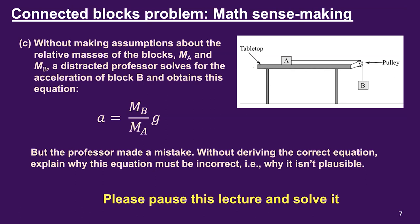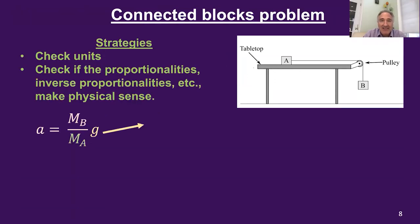Please pause this lecture and solve this problem. On this kind of mathematical sensemaking question, some strategies include checking for the units. But the distracted professor's equation has correct units — there's not a units mistake in there; it's wrong for another reason. The main strategy is to check the proportionalities and inverse proportionalities and see if they make physical sense. We're looking for a case where they don't make physical sense.